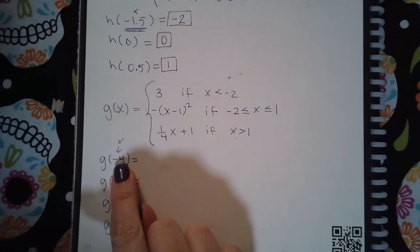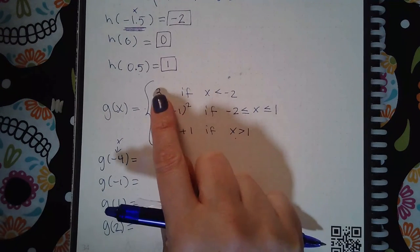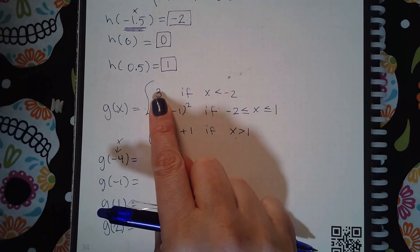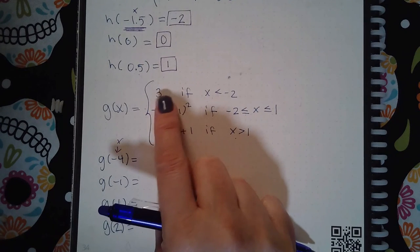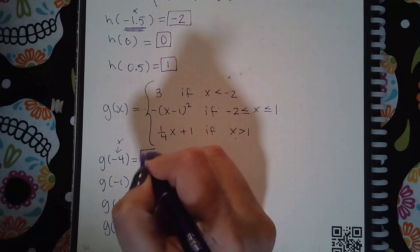So for negative 4, negative 4 is actually less than negative 2, so I would use this expression to find the y value. And there's no x's here to plug the negative 4 in, so the answer is just simply the y value 3.